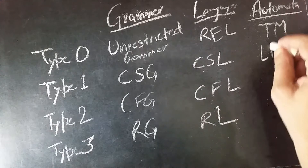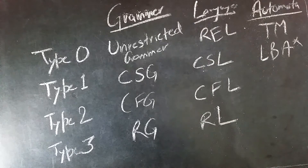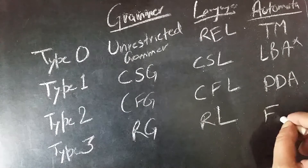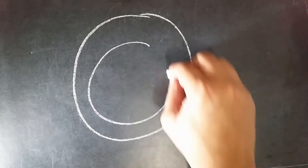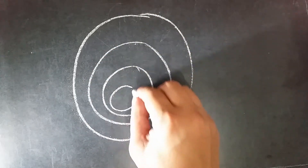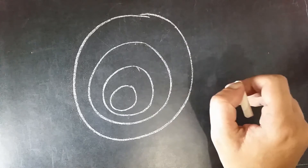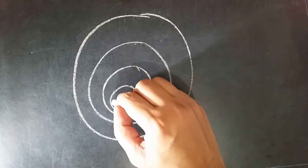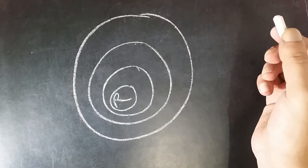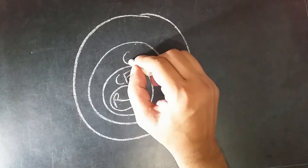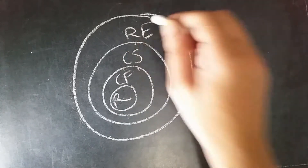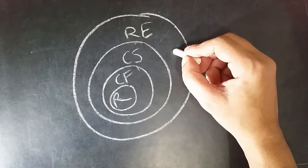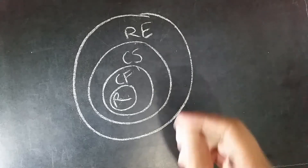By type 1 it's linear bounded automata, which by the way is not in GATE syllabus. By type 2 is pushdown automata and by type 3 is finite automata. Out of all four types of grammars, each one is enclosed within the other. Type 3 or regular is the most restrictive, then context free, then context sensitive, and recursive enumerable has the widest scope. Type 0 has the highest power and type 3 has the least power.